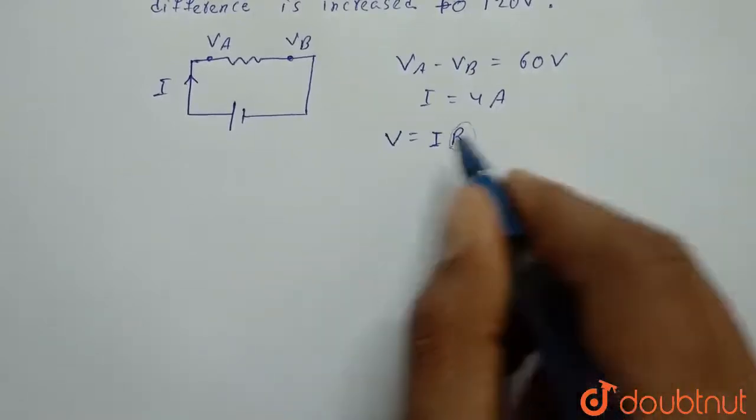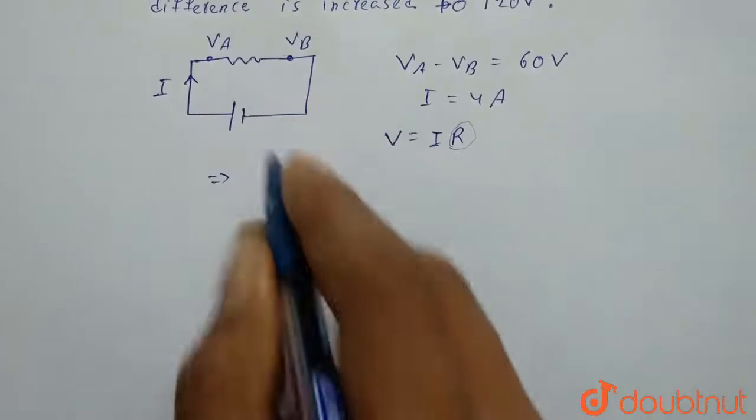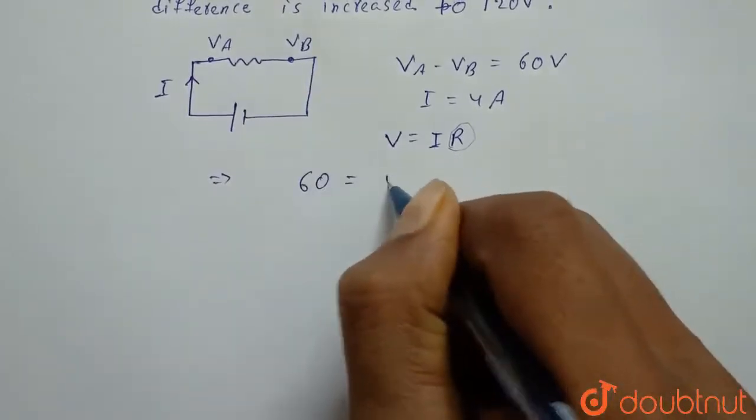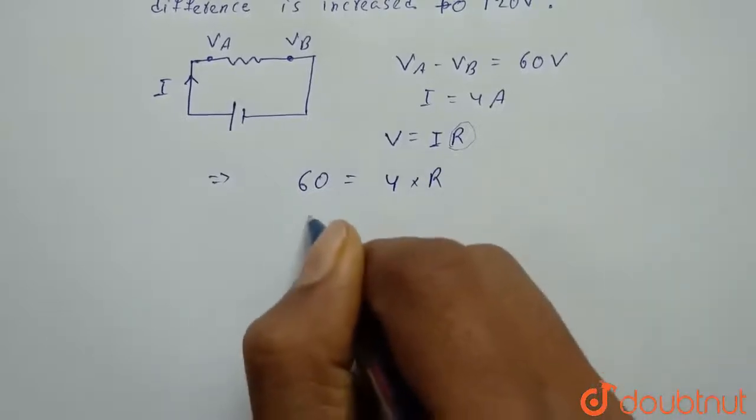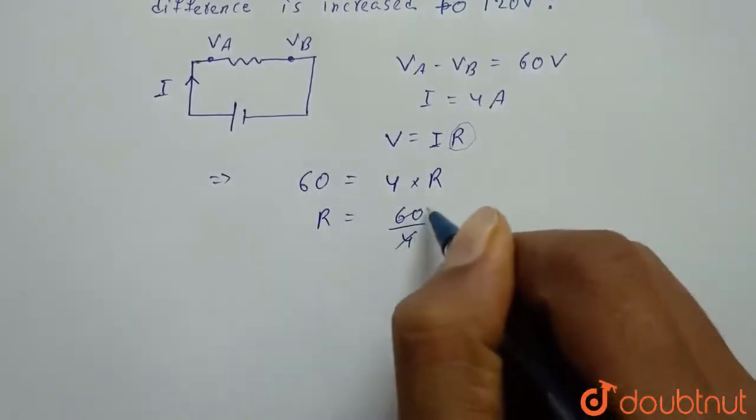to find the resistance of this heater. So V across this is 60 volts which equals I, I is 4 amperes, times R. So from here we will get R equals 60 upon 4 which will be 15 ohms.